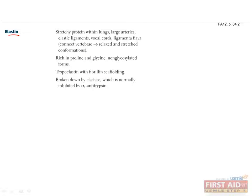Elastin is an elastic protein found in the lungs, large arteries, elastic ligaments, vocal cords, and ligamentum flava. It's similar to collagen because they're both rich in proline and glycine. However, unlike collagen, it does not contain hydroxyproline or hydroxylysine. It's also similar to collagen because both are produced by fibroblasts.